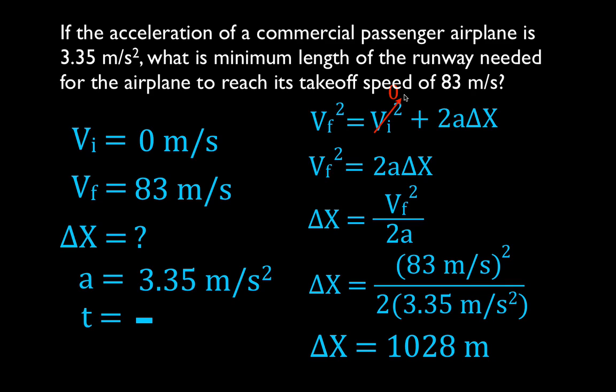1028 meters. There you go, pretty straightforward. Follow those steps: write down the five variables, write down what you're given, what you're trying to solve for, choose the correct kinematic equation, rearrange for the variable you're solving for, plug the values in, get the answer with the correct units. That's it, that's all there is to it. You can do that now.